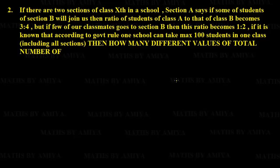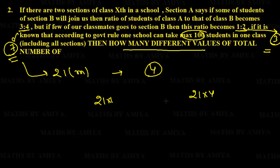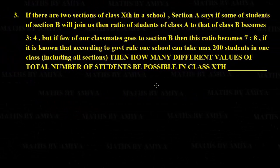Question two is almost the same with different data. First ratio is 3 to 4, second is 1 to 2, and you are looking for how many possible values exist less than 100. The sum 4 plus 3 is 7, and 1 plus 2 is 3, so we need multiples of LCM(7, 3) = 21 less than 100. Those are 21, 42, 63, and 84 — four multiples — so the answer is 4.